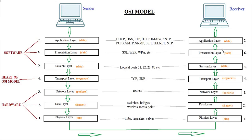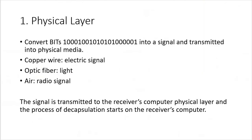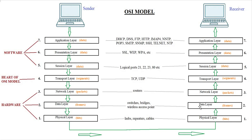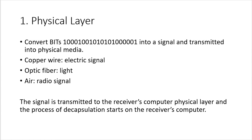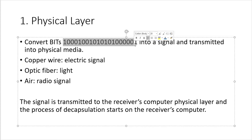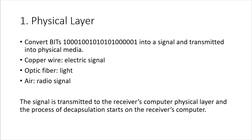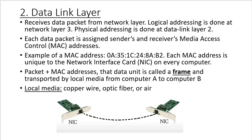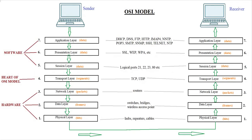Now the receiving computer starts the process of decapsulation. The signal arrives via radio wave, satellite link, or optic fiber. The Physical layer takes the incoming signal and converts it back into binary format — ones and zeros — so the computer can process it. It then passes those bits up as frames to the Data Link layer, which removes the sending and receiving MAC addresses and sends the data up to the Network layer as a packet.